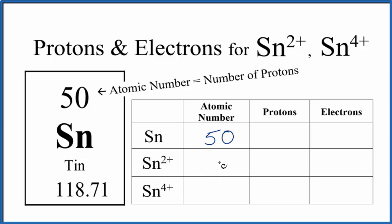So if we have Sn, it doesn't matter the charge, the atomic number is going to be 50. And the atomic number equals the number of protons. So for Sn, 50 is the atomic number, 50 protons, and again for the ions, that'll be 50 as well.